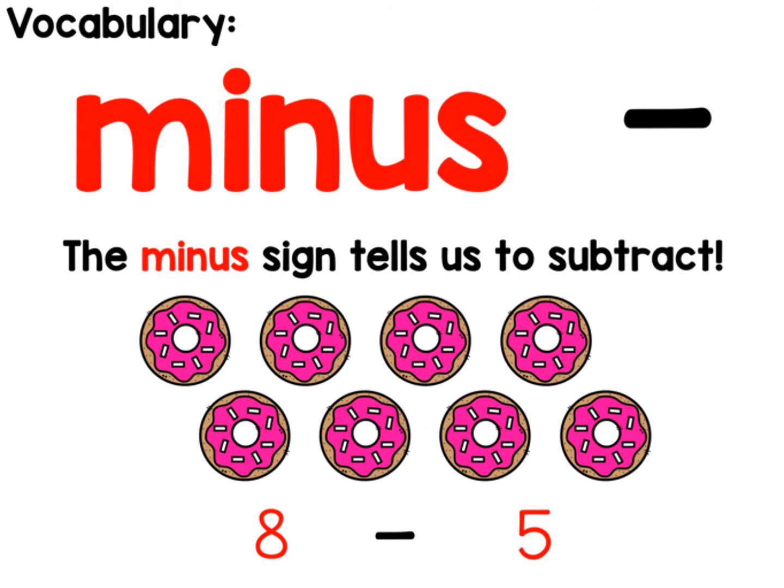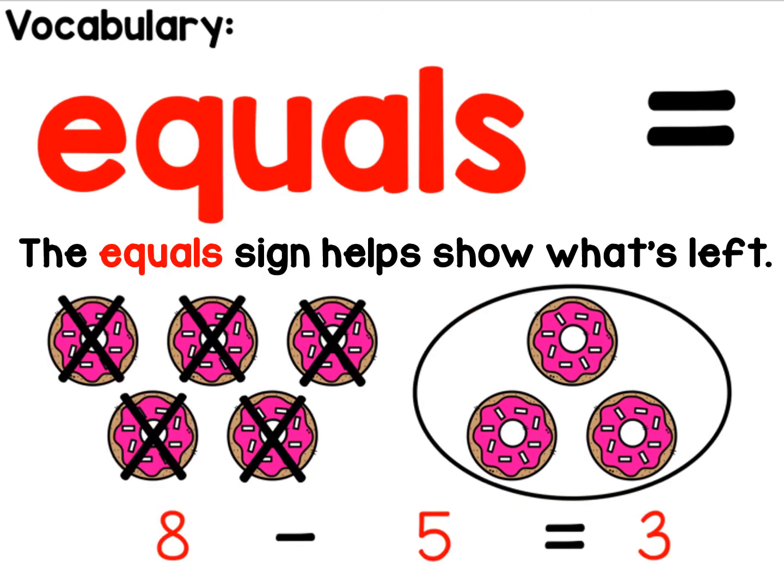Minus. The minus sign tells us to subtract. Eight minus five. Equals. The equals sign helps show what's left. Eight minus five equals three.